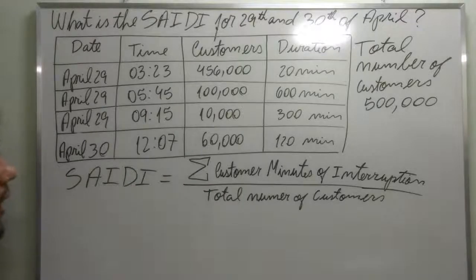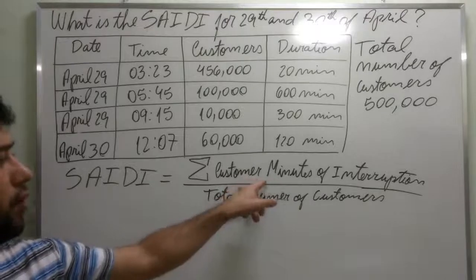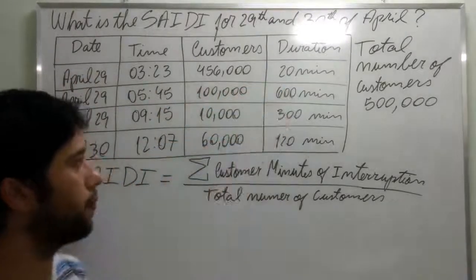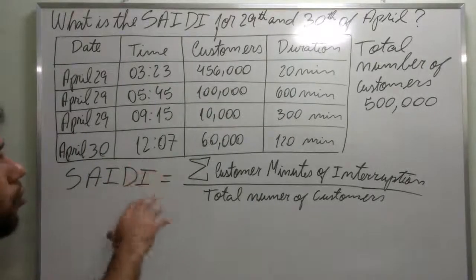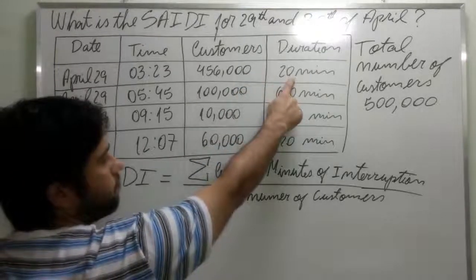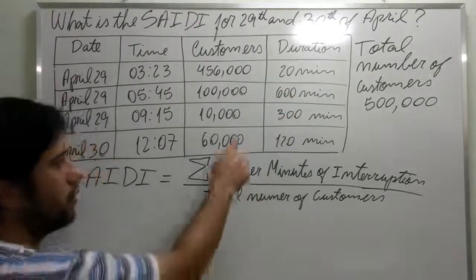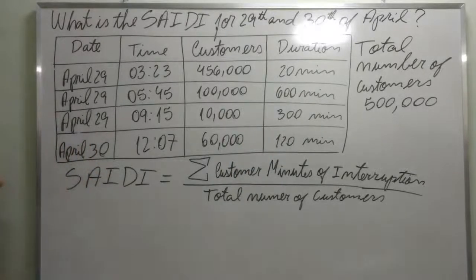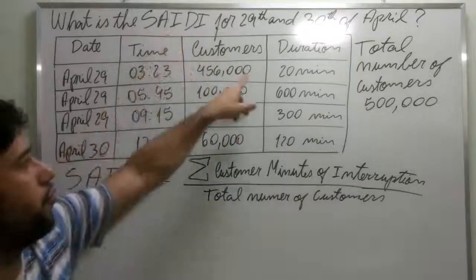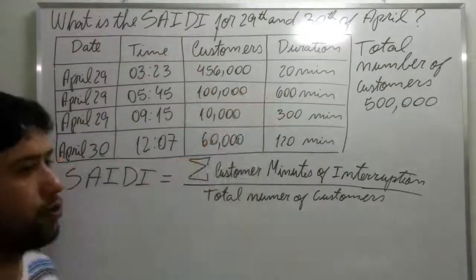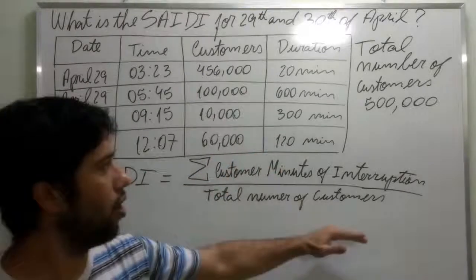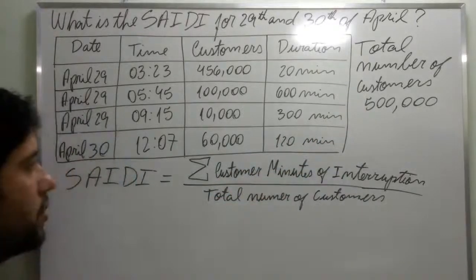The strategy to calculate the SATI for these events will be to multiply each number of interrupted customers by the corresponding duration of interruption for each event, sum all those products together, and divide by the total number of customers, which is 500,000.